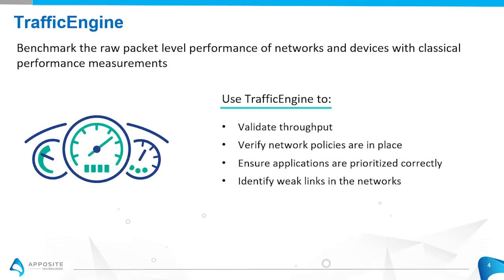Another example of that would be: are the packets getting filtered correctly? We can identify weak links or other problem network sources, such as slow routers or switches, network misconfigurations, and other situations. Overall, traffic engine allows you to quickly verify your network is behaving as expected.